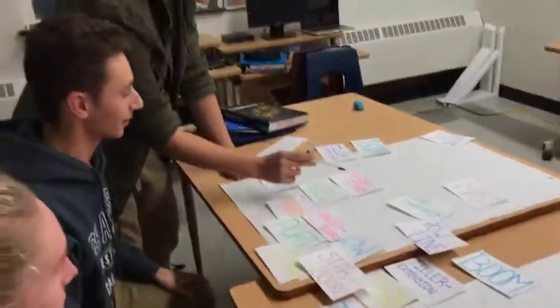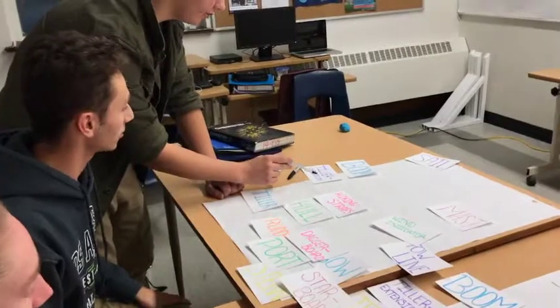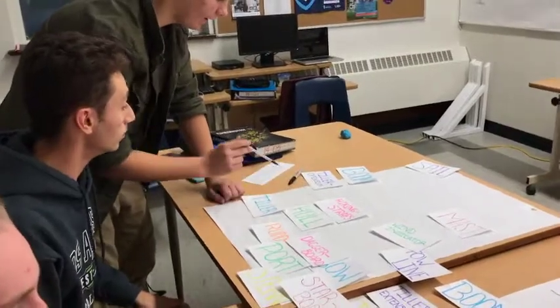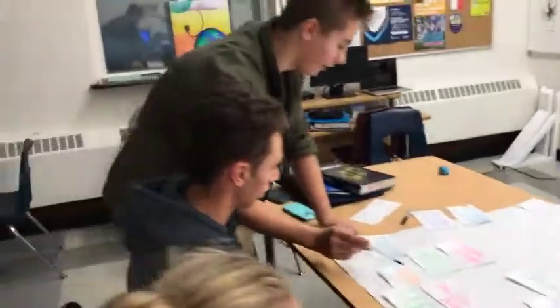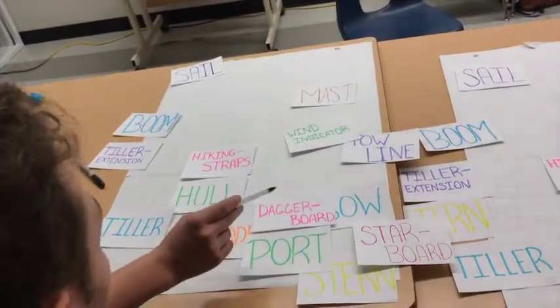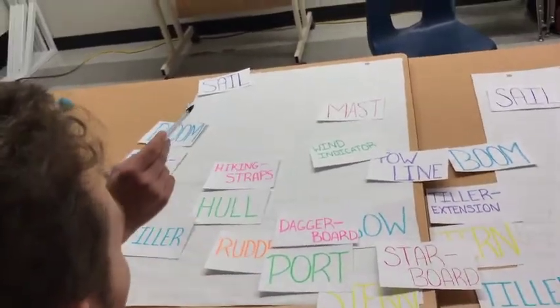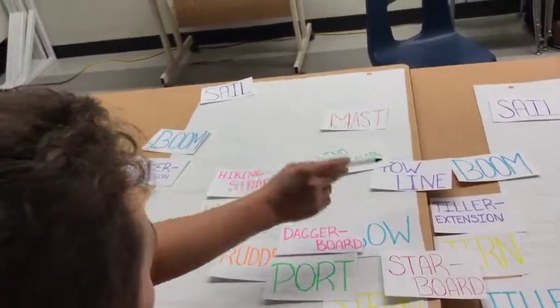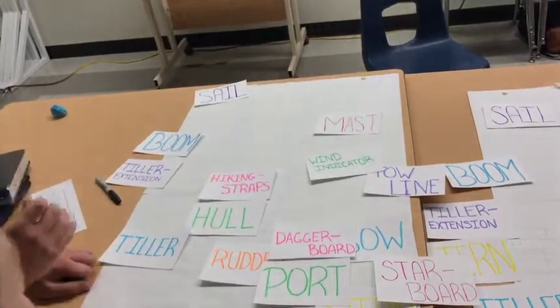Let's check James's answers: sail, mast, wind indicator, hiking strap, hull, tiller extension, tiller, rudder, boom, port, starboard, bow, stern, dagger board, hull, toe line. James has it — he got them all correct and wins the competition!